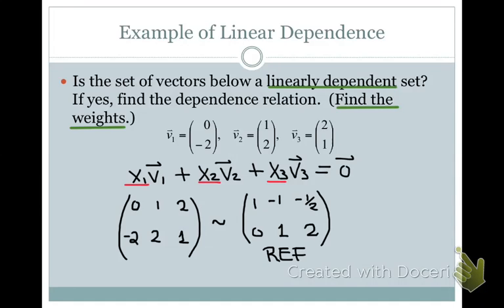To answer this question, we need to look at the linear system. Here you see the coefficient matrix placed into row echelon form. The reason we're only looking at the coefficient matrix is because if we were to create the augmented matrix, the augmented column would simply contain zeros, and any row operations performed on that column will still give you zeros.